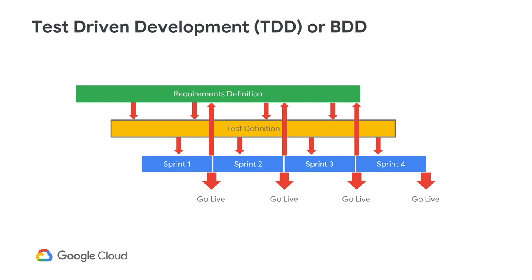This can be done using the test-driven development method or the behavior-driven development we spoke about earlier. Go as far as having the test scripts coded so that the QA engineers are just making minor modifications in the sprint itself.